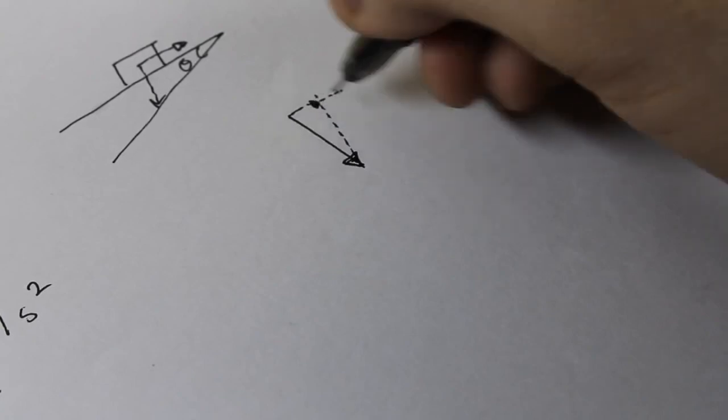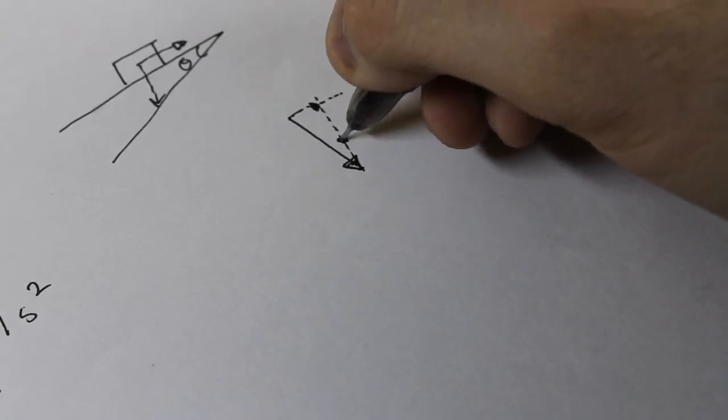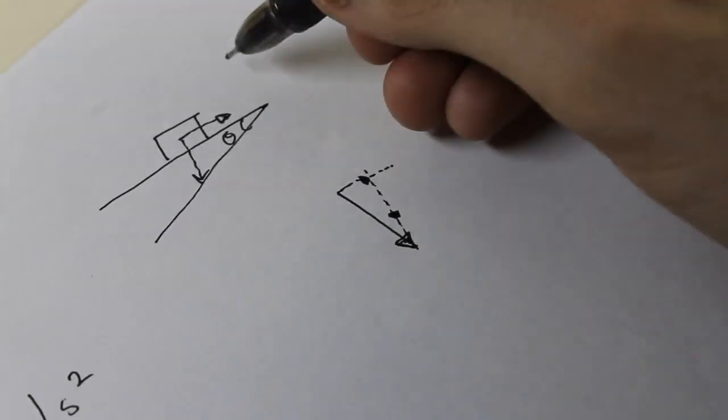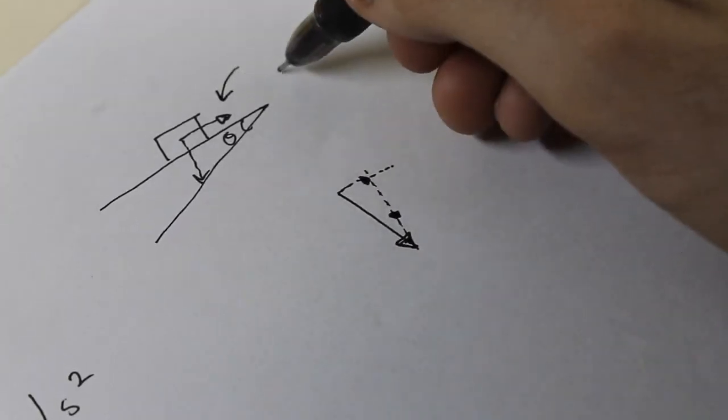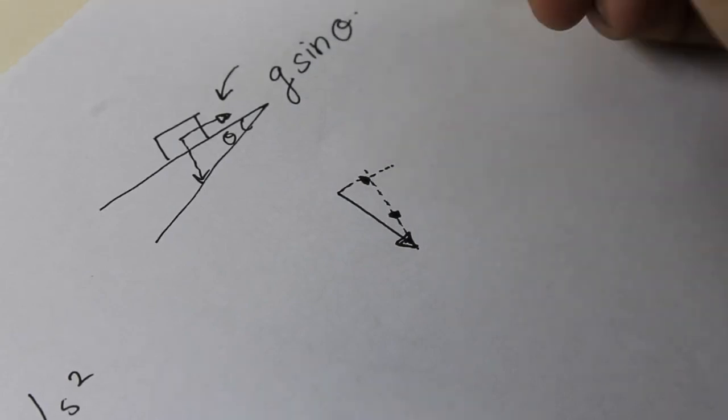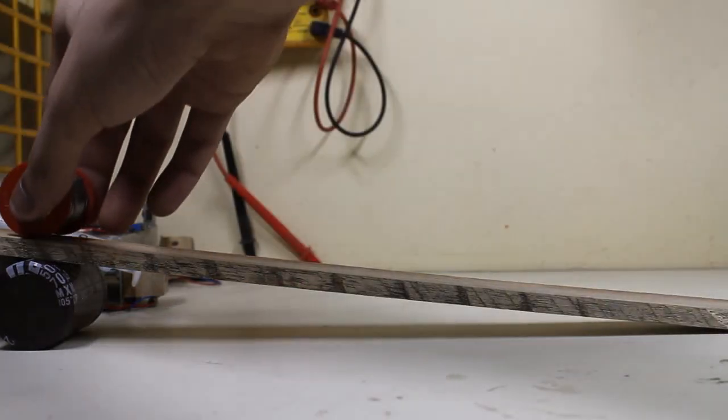The free body diagram of any body on an incline would look something like this. The knowledge of vectors and some trigonometry will tell us that the body will experience a pull of g times sine of angle of inclination along the inclined plane. Don't believe me? Let's test it.